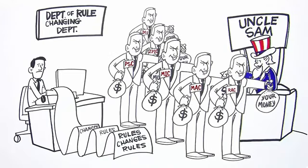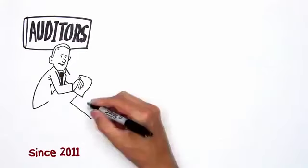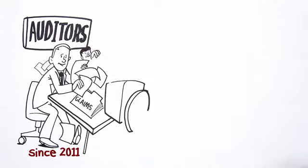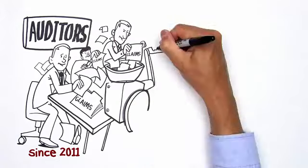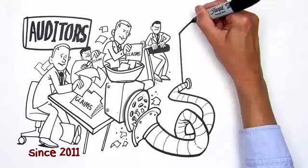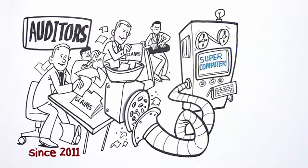You know, the ones with three-letter names that are more like four-letter words? Since 2011, the government's been running Medicare fee-for-service claims through a complex set of algorithms, trying to predict which claims might meet their criteria for fraud or abuse.